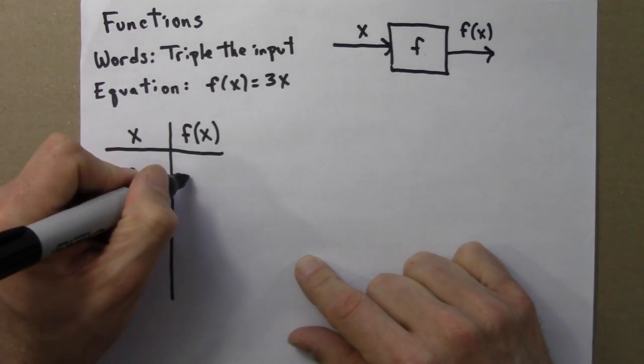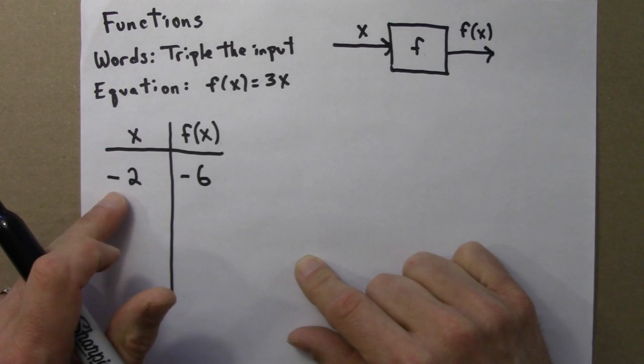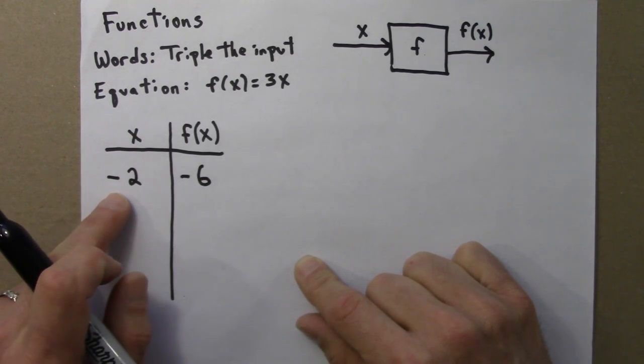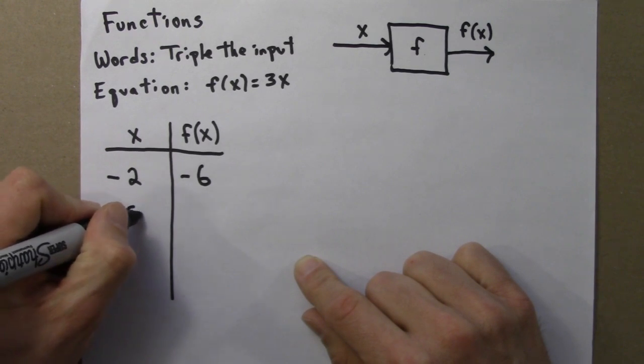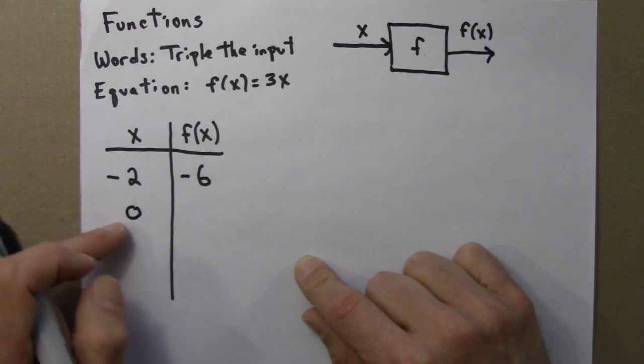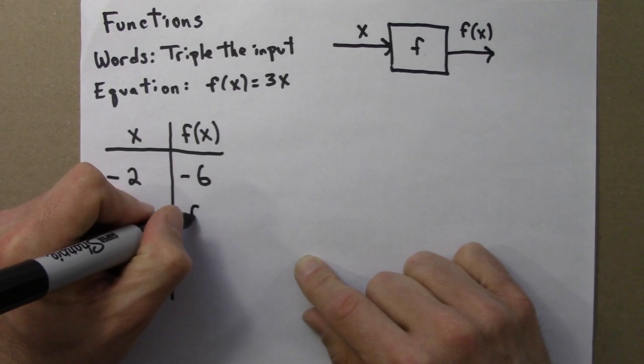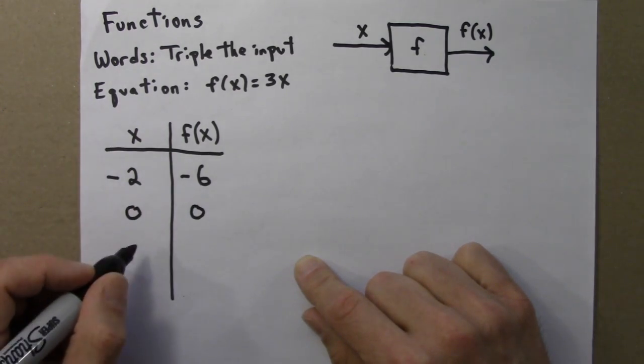Our output would be -6, because we take the input, multiply it by 3, -2 times 3 is -6. An input of 0 gives an output of 0, because 3 times 0 is 0.